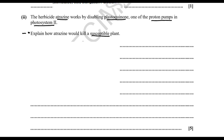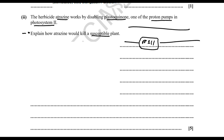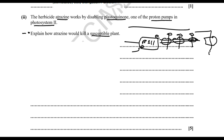Remember that photosystem 2 is in the thylakoid membrane, where photolysis occurs. Light absorbed by photosystem 2 causes electrons to move along a chain of carriers and proton pumps, moving hydrogen ions from the stroma into the thylakoid interior. Those hydrogen ions then flow out through ATP synthase back into the stroma, generating ATP.